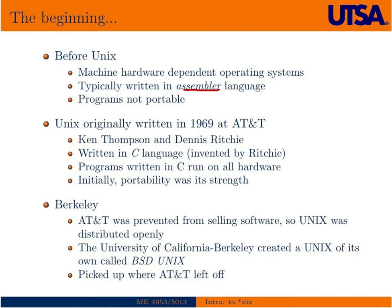In 1969, a couple of guys at AT&T, namely Ken Thompson and Dennis Ritchie, wrote an operating system that they called Unix. Initially it wasn't written in C, but in the early 70s they rewrote it in C. C language was invented by Ritchie himself.